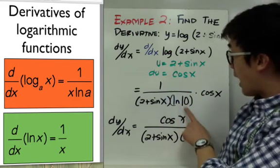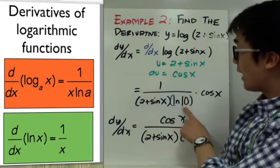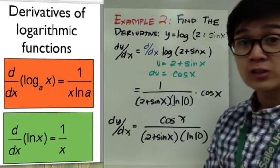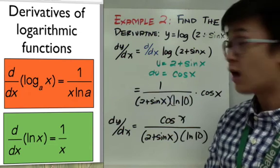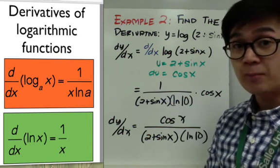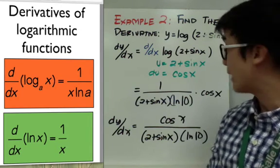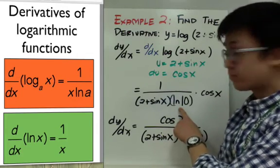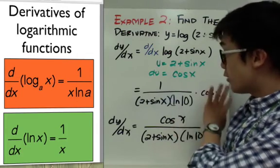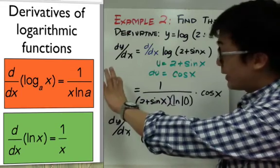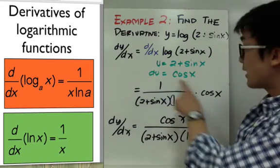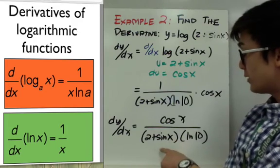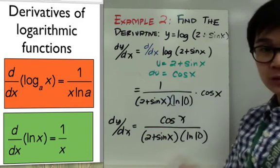How did we get 10 for ln here? Every time you have a logarithm with no base written, it's automatic that the base is 10. That's why in our derivative we have ln(10). To further simplify dy/dx, we move cos x to the numerator, giving cos x all over (2 + sin x)·ln(10).